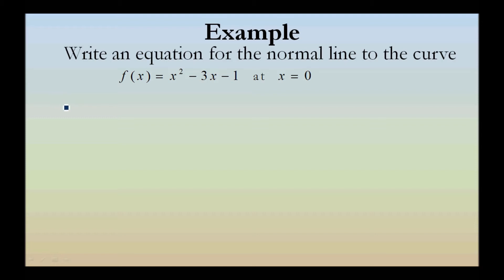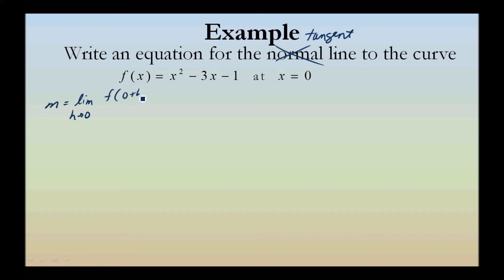Since the first example was a normal line, we'll switch this to a tangent line for good measure. So m, the slope, m equals the limit as h approaches 0 of f of 0 plus h minus f of 0 divided by h.